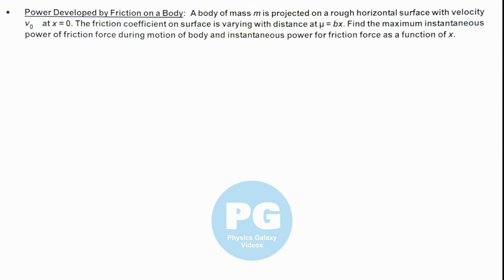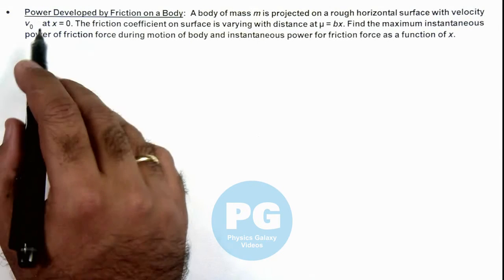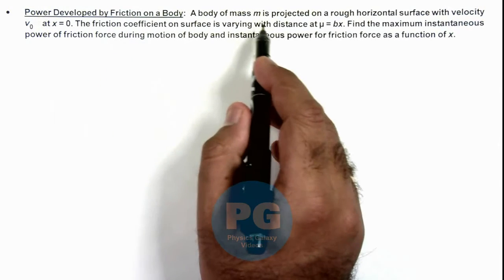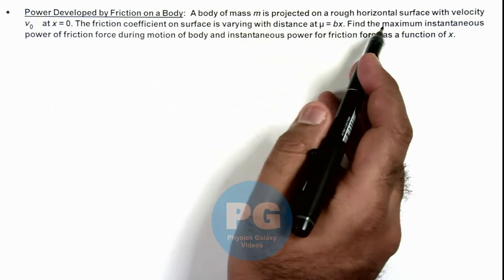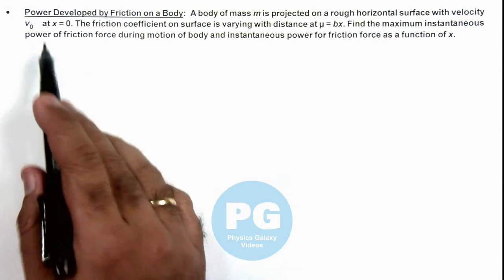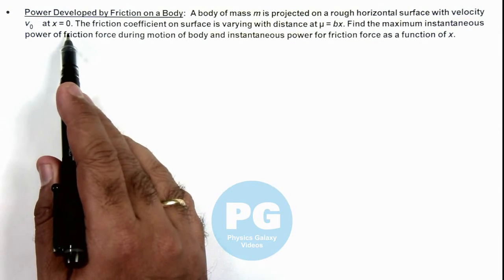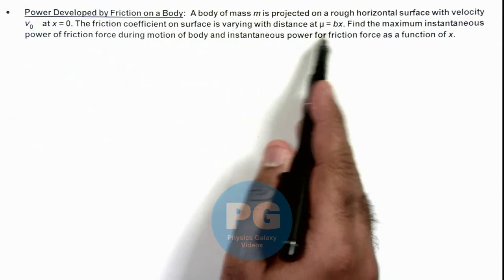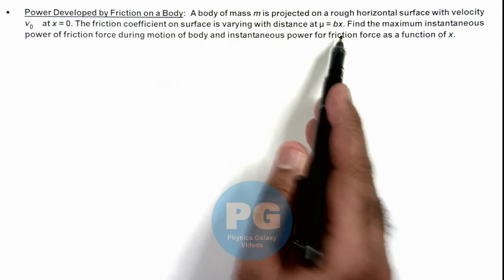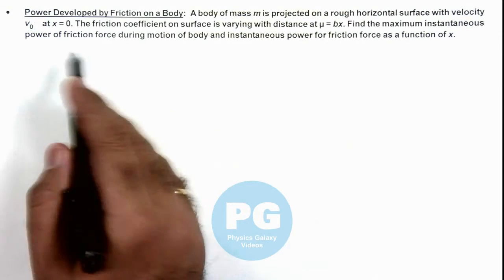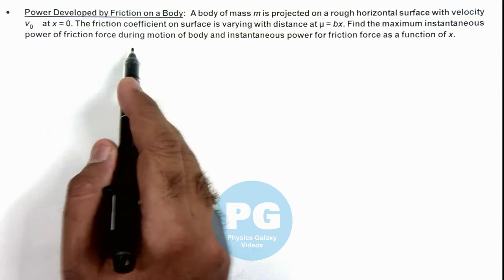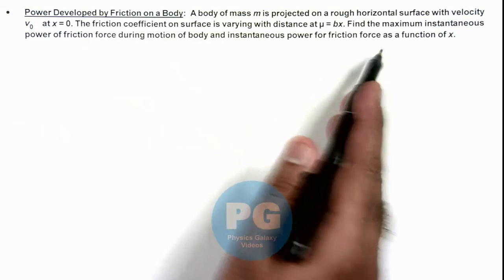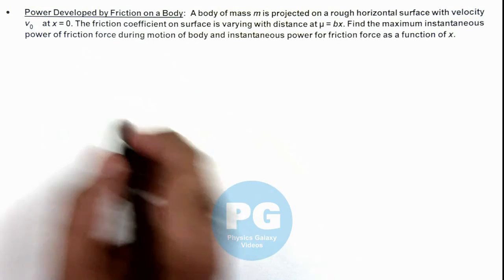In this illustration, we'll be calculating the power developed by friction on a body. Here, a body of mass m is projected on a rough horizontal surface with velocity v₀ at x equal to zero. The friction coefficient on the surface is varying with distance as mu equals bx. We are required to find the maximum instantaneous power of the friction force during motion of the body, and the instantaneous power of the friction force as a function of distance travelled x.